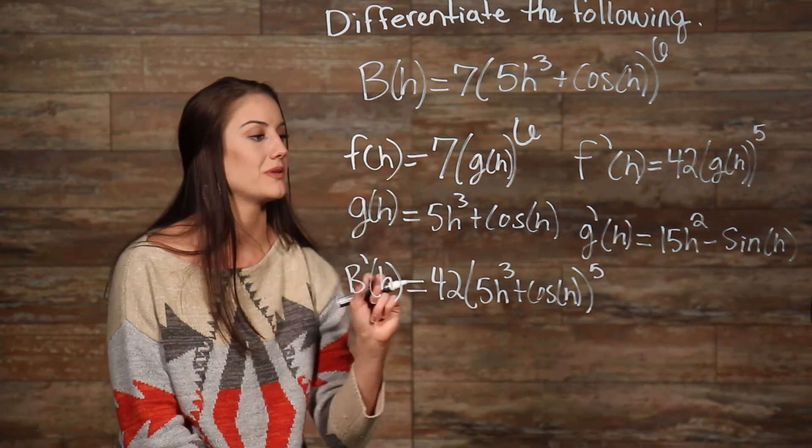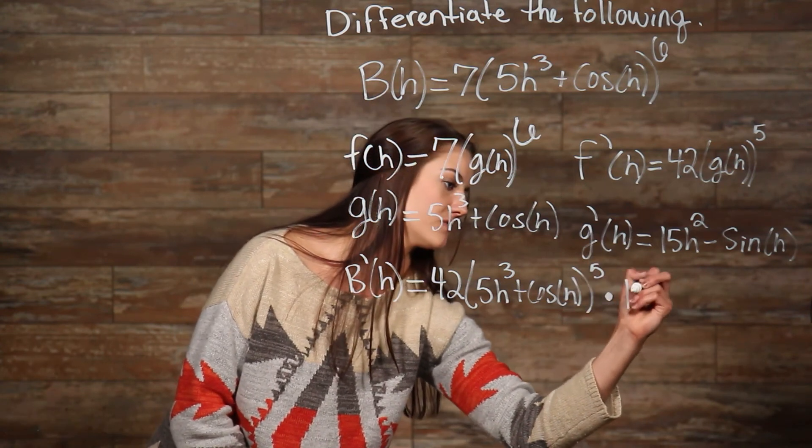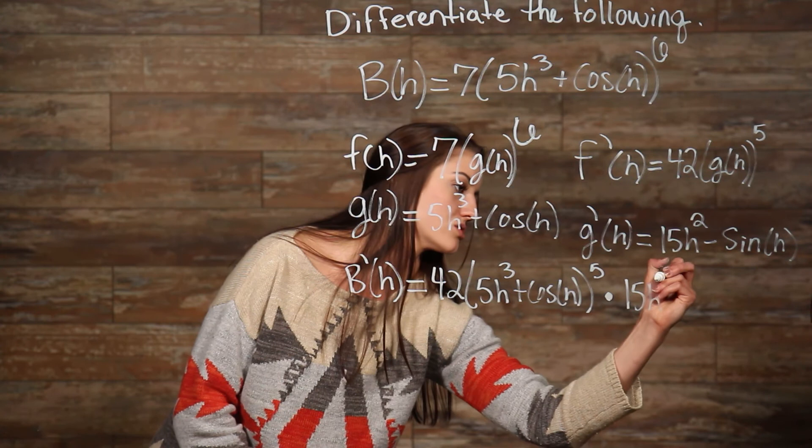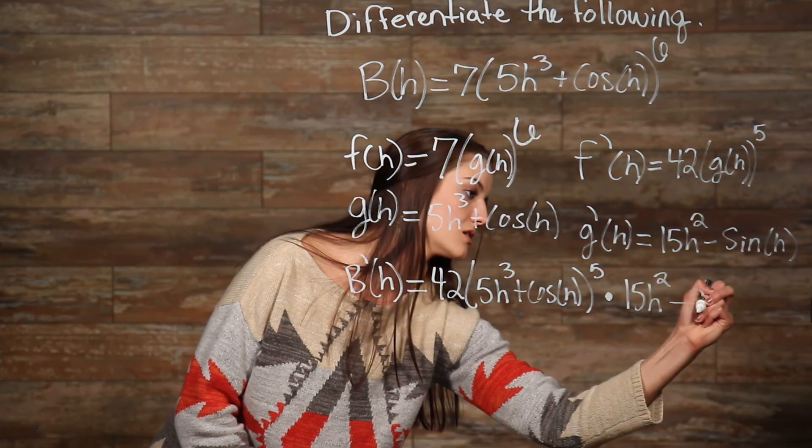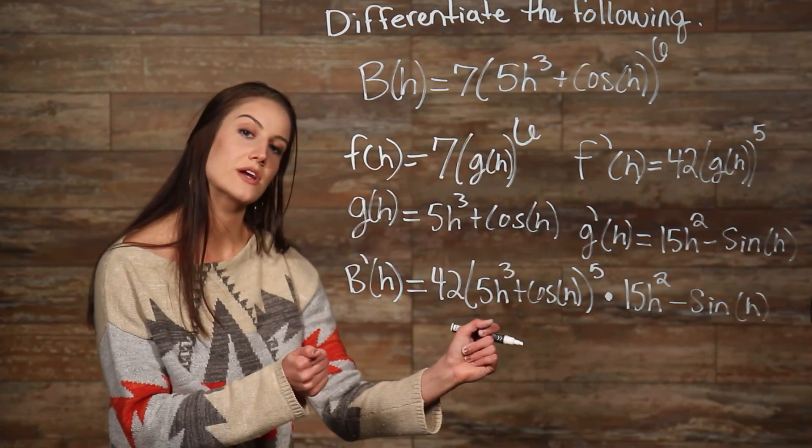Now we have to multiply times the derivative of the inside function. So that's our g prime of h here, so that's 15h squared minus sine of h. And there's your answer.